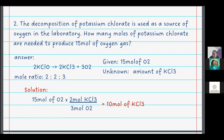The mole ratio is 2:3 (KClO3 to O2). Given 15 moles of O2, and the unknown is the amount of KClO3. So potassium chlorate equals 15 moles of O2 times 2 moles KClO3 over 3 moles O2.